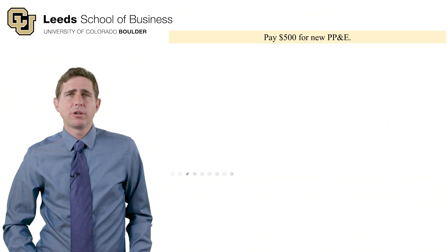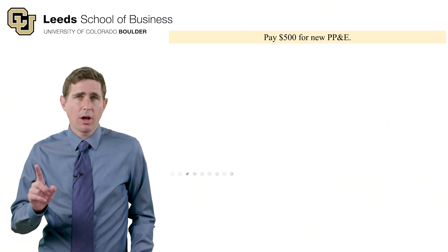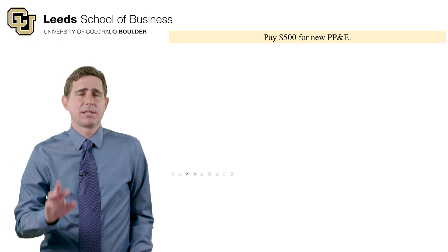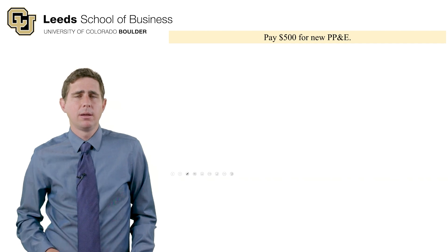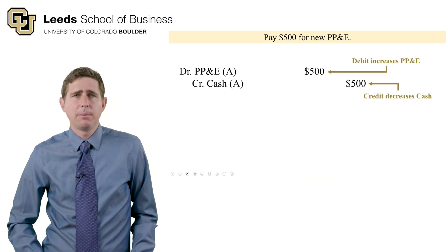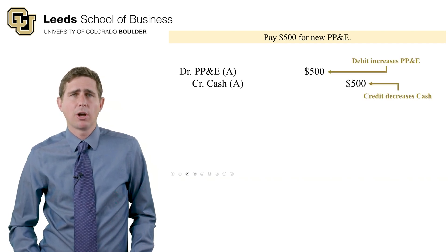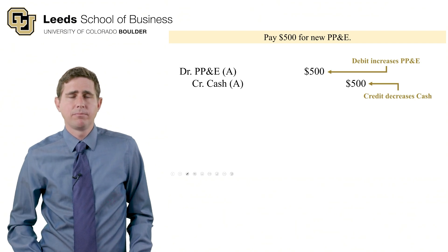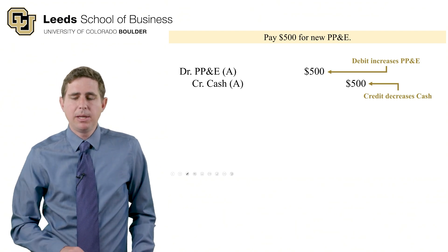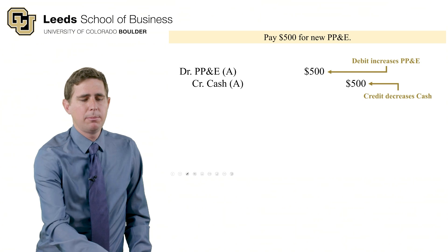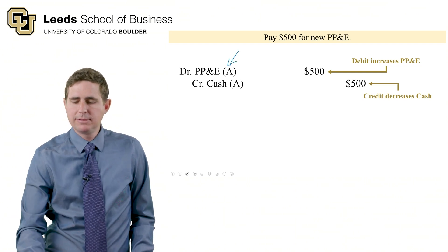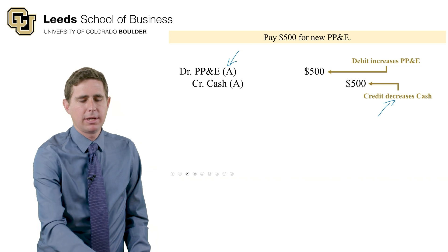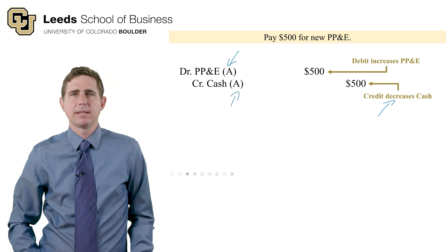Next transaction: we pay $500 for new PP&E. Cash is leaving the business. We'll debit PP&E — it's an asset — to make that account go up. Debits are before credits here. This debit to PP&E increases PP&E, and this credit to cash decreases cash because you decrease an asset with a credit.